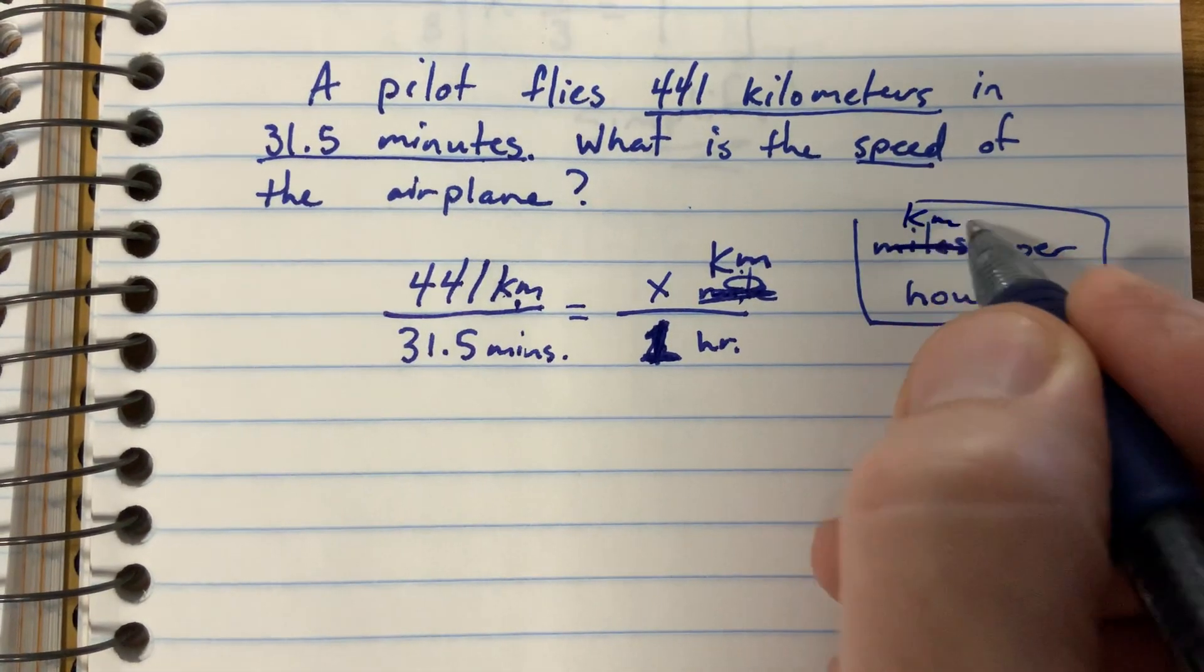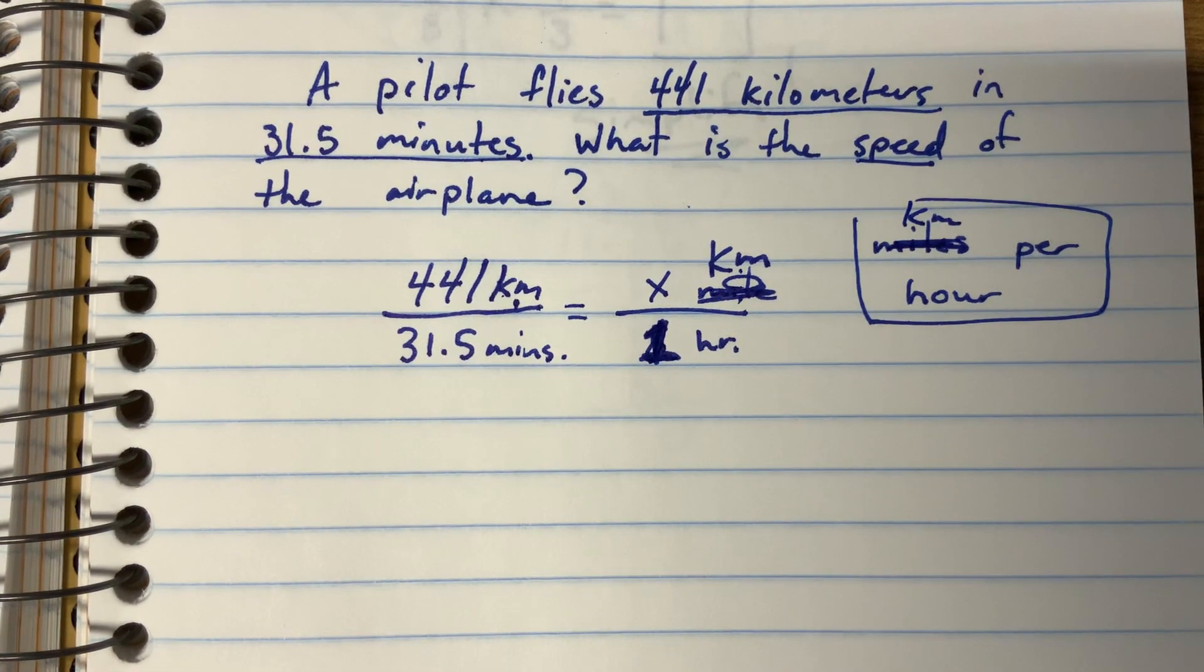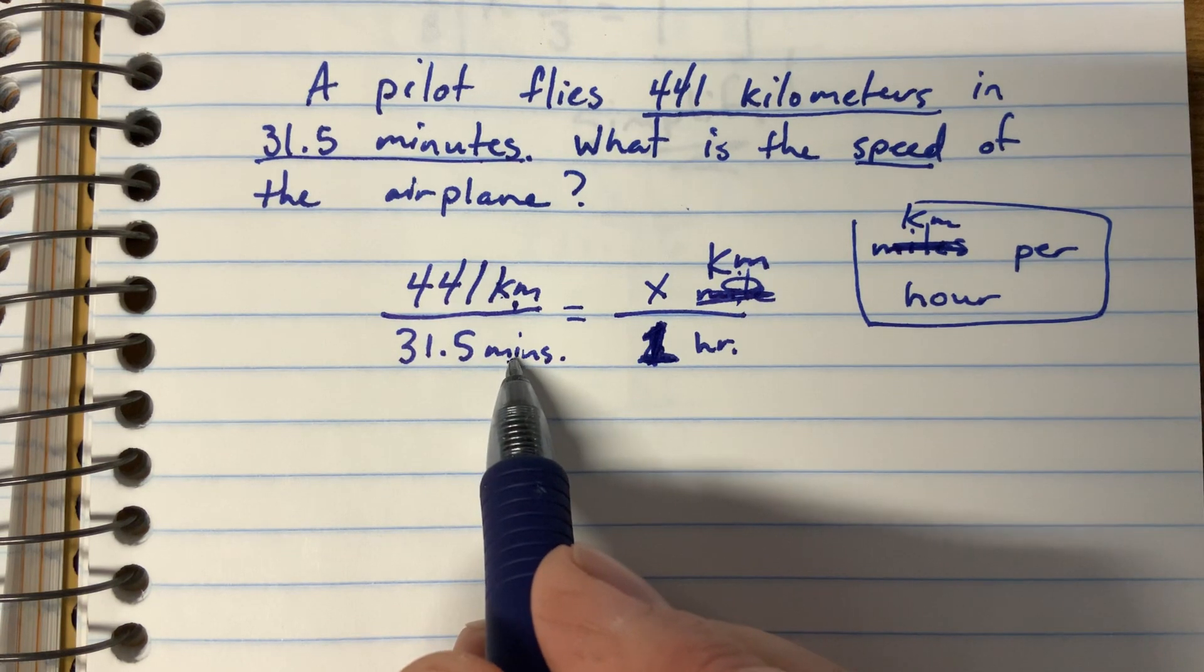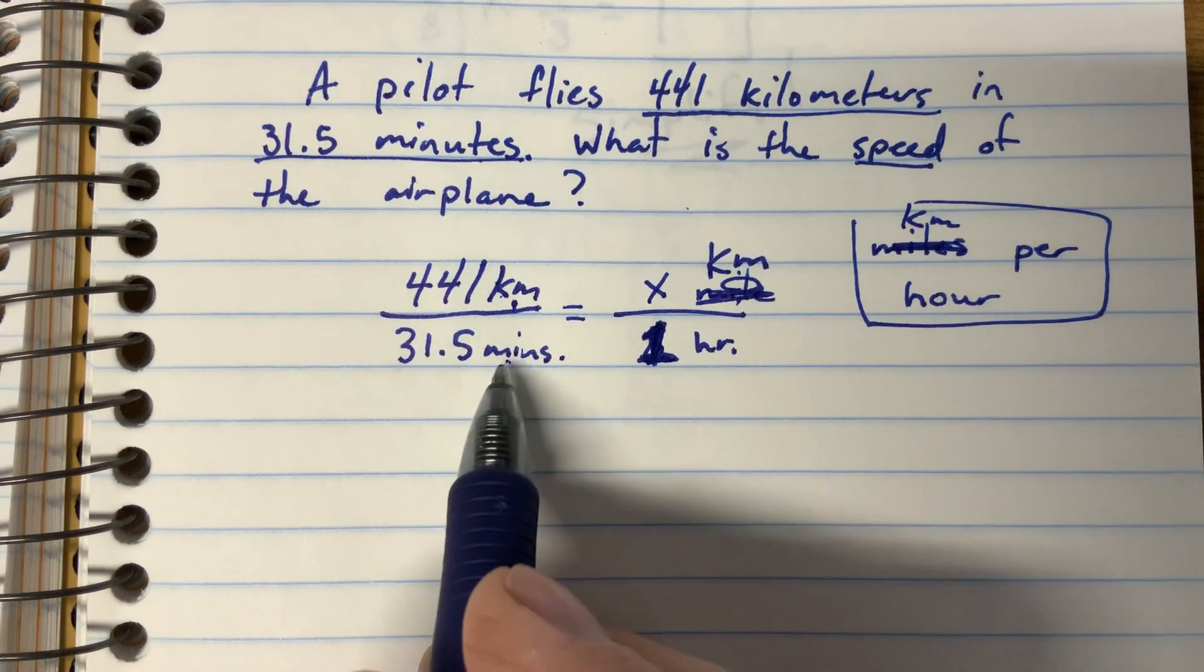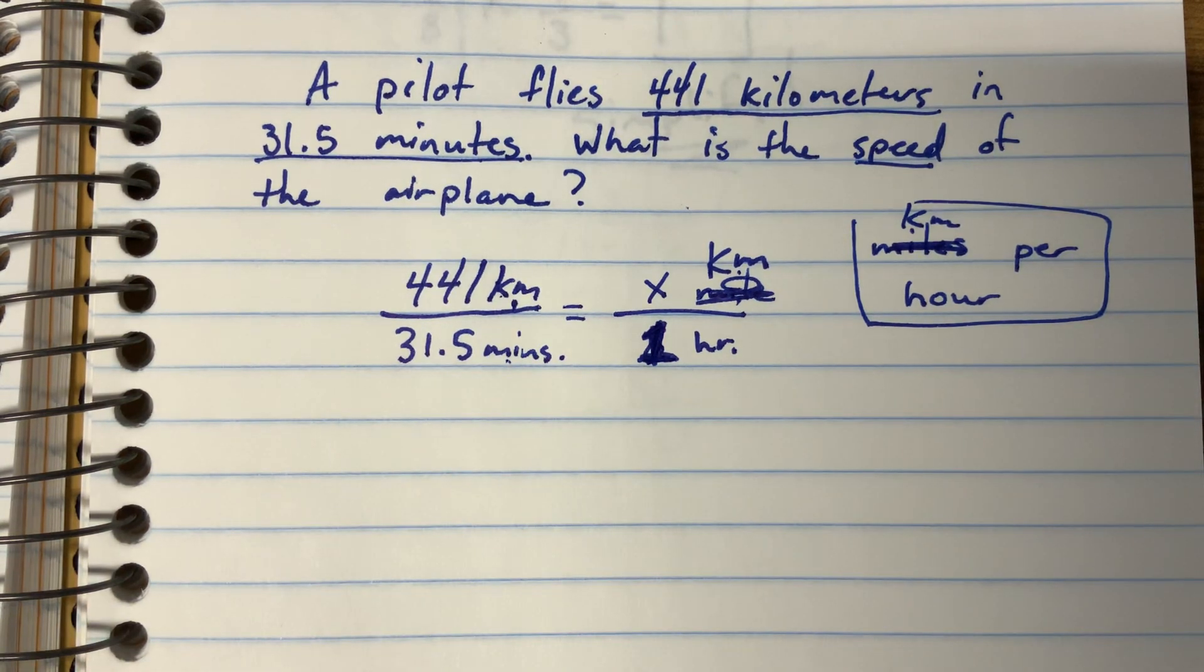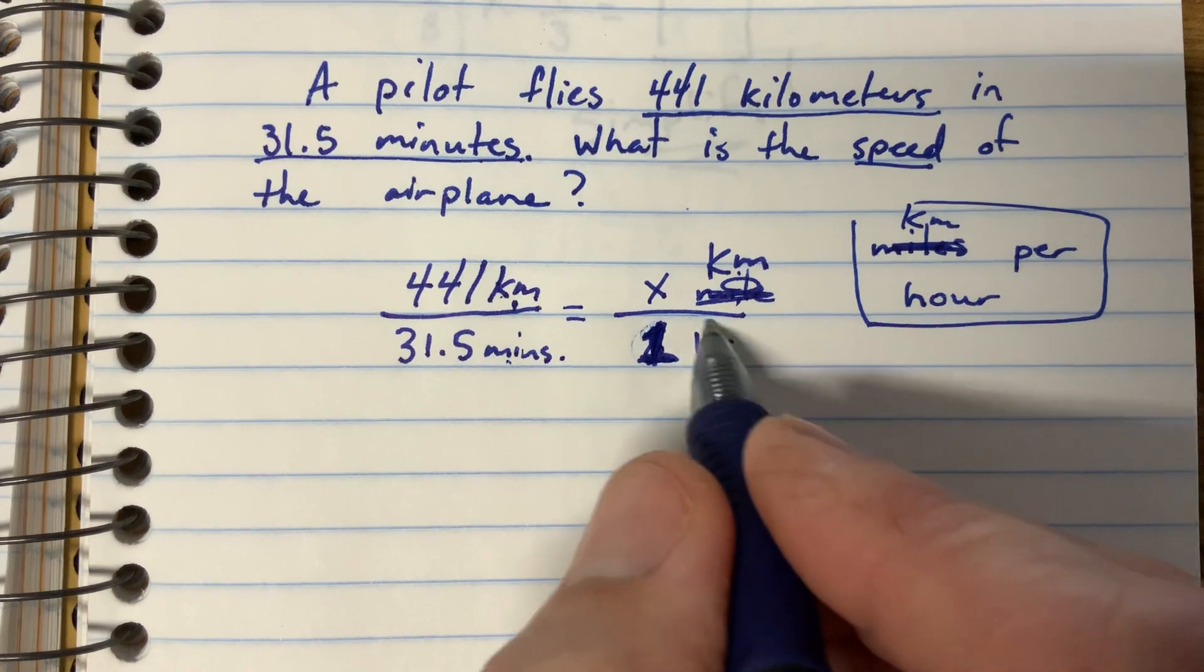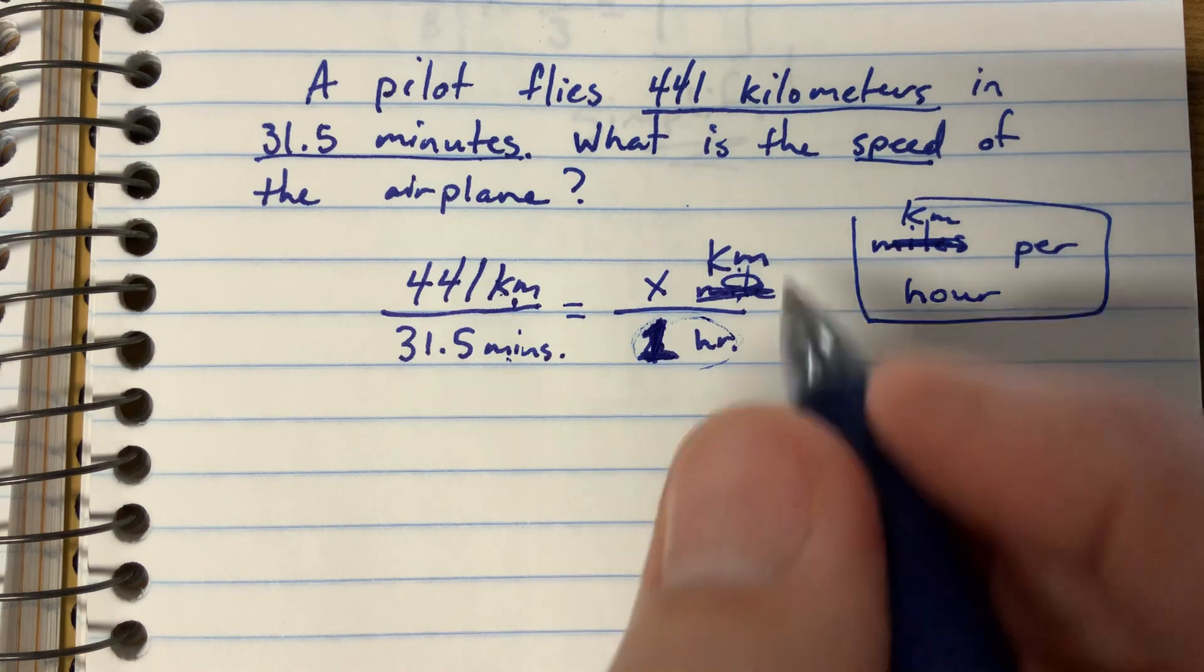And then we have minutes to hours. That also doesn't work. So we need to either change 31 and a half minutes into the equivalent of hours or turn our one hour into the equivalent of minutes. I think it's much easier to deal with this one hour. So if we have one hour here, we need this to be measured in minutes. How many minutes are in an hour?